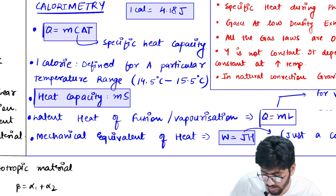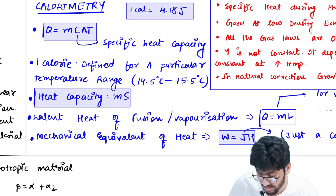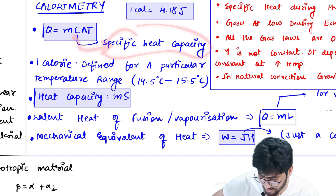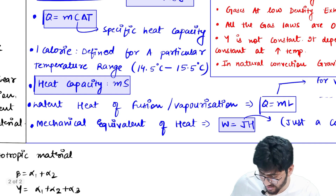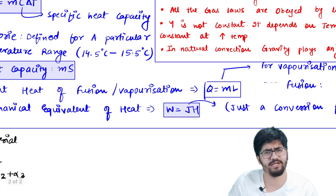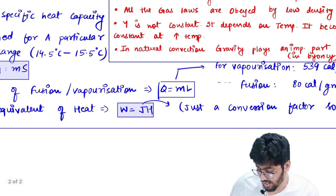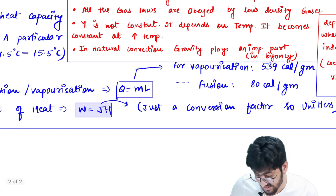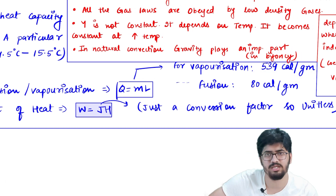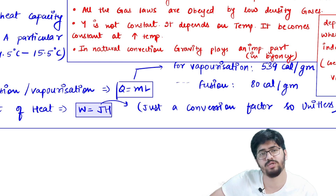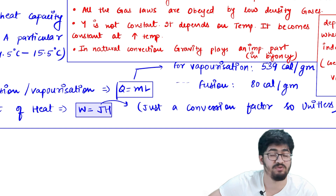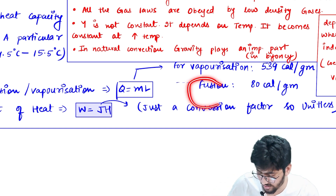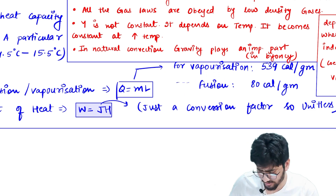Q = MC·ΔT — everyone knows this from 10th class. C is specific heat capacity, and heat capacity is M × S. Next, latent heat: Q = ML, where L is the latent heat of fusion or vaporization. The latent heat of vaporization of water is 539 calories per gram, and the latent heat of fusion is 80 calories per gram. These values are the same as what you study in chemistry — MC·ΔT applies in both.